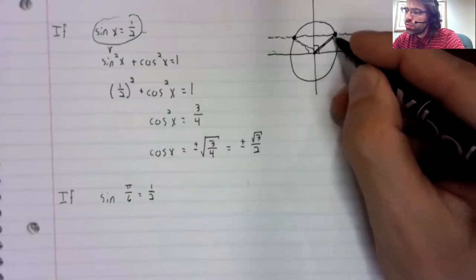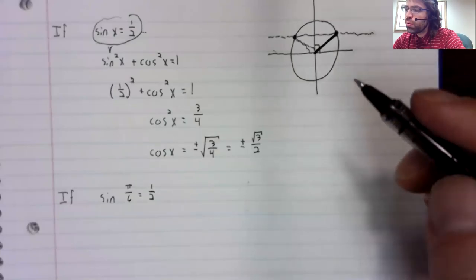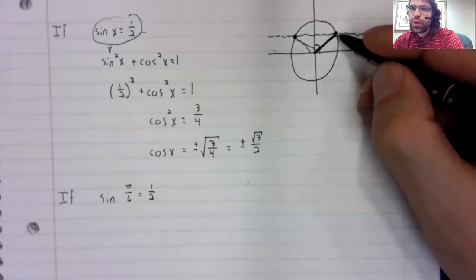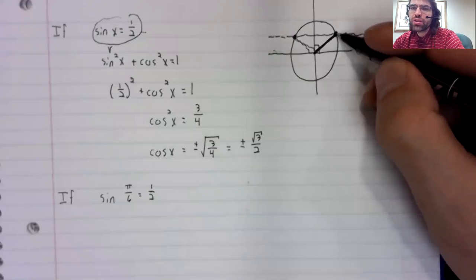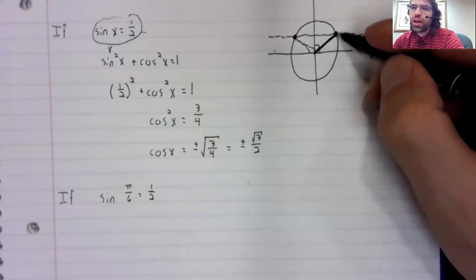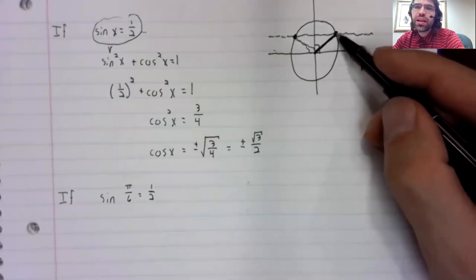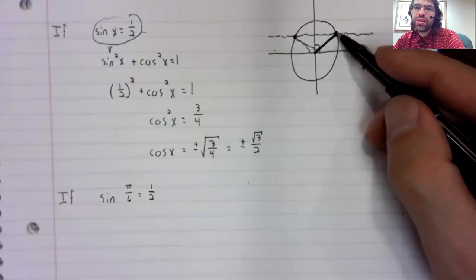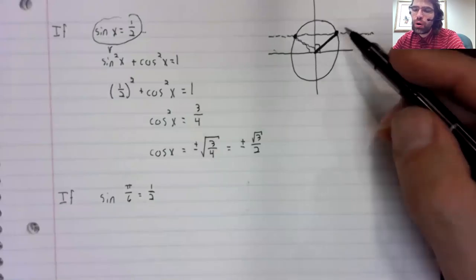So of the two points, this must be the one we're looking at. The cosine of this point is positive because this point has an x coordinate here in the first quadrant.